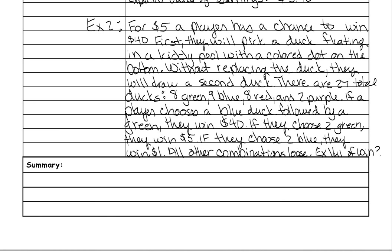For $5, a player has a chance to win $40. First, they will pick a duck floating in a kiddie pool with a colored dot on the bottom. Without replacing the duck, they will draw a second duck. There are 27 total ducks: 8 green, 9 blue, 8 red, and 2 purple. If a player chooses a blue duck followed by a green, they win $40. If they choose 2 green, they will win $5. And if they choose 2 blue, they will win $1. All other combinations lose.